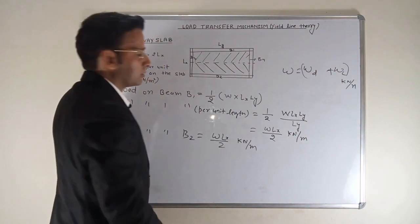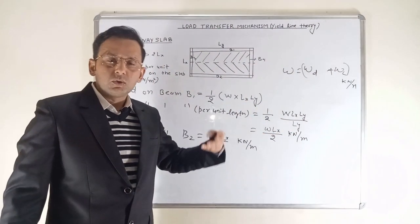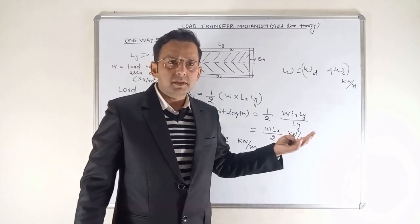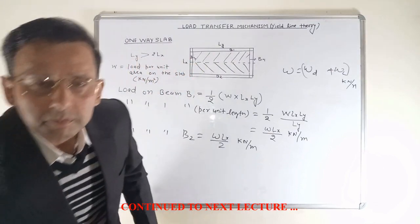This is very simple and there is no load on the beam B3 and B4. Now I'll discuss how the load is transferred in two-way slab. Two-way slab is just a little bit different from this. You need some mathematical calculation, so I just made two-way slab here in the same way.